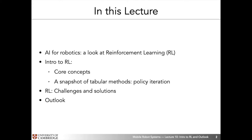In this lecture, we'll be looking at a couple of new avenues being developed in the realm of autonomous robot systems. In particular, we'll focus on the use of artificial intelligence for robotics in the sense of current trends in machine learning and AI. We'll focus specifically on reinforcement learning, introduce its first principles, go deeper into one specific method called policy iteration, and conclude with challenges that remain to be addressed within AI and robotics, plus an outlook on robotics as a whole.